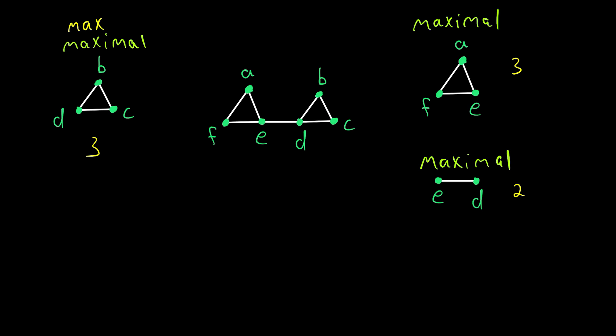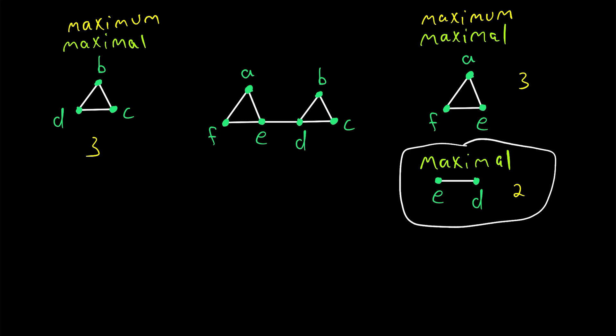And so, we see that these two maximal cliques are also maximum. So, again, a maximal clique is a clique that is not a proper subgraph of another clique. Remember, the first clique we looked at with A and F was not maximal, because it's a proper subgraph of this clique.